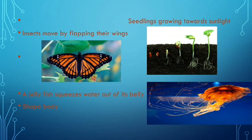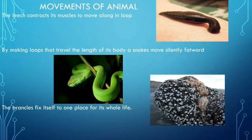A jellyfish squeezes water out of its bell-shaped body to move. A leech contracts and relaxes its muscles, making loops that travel the length of its body to move forward. A snake moves silently forward by forming small loops with its body, allowing it to travel through tight spaces.